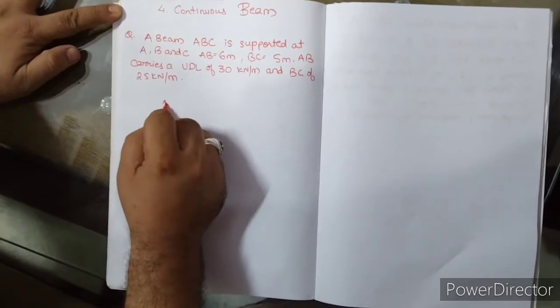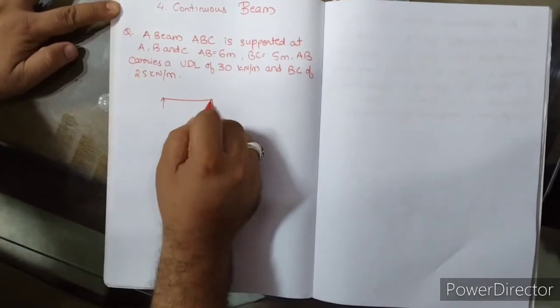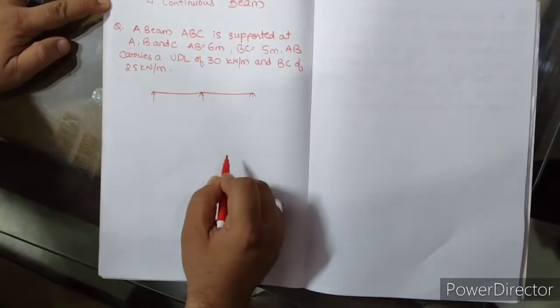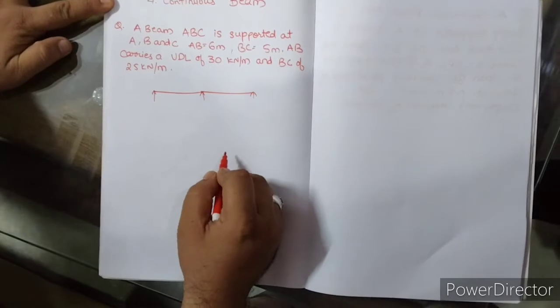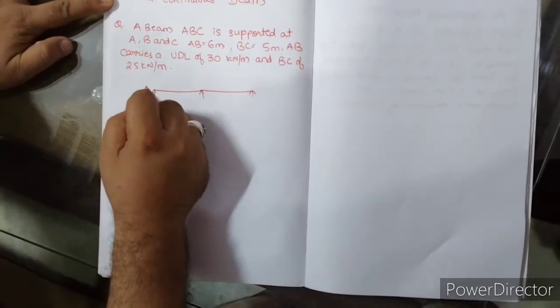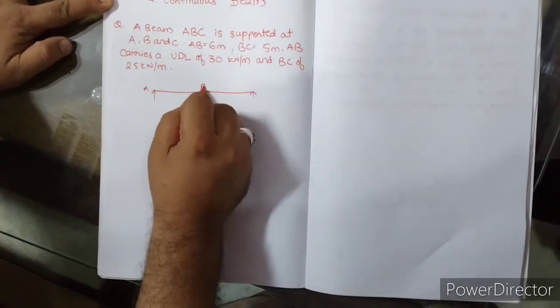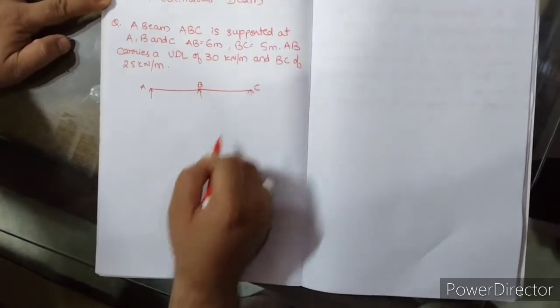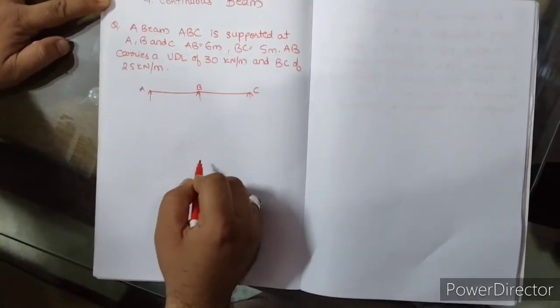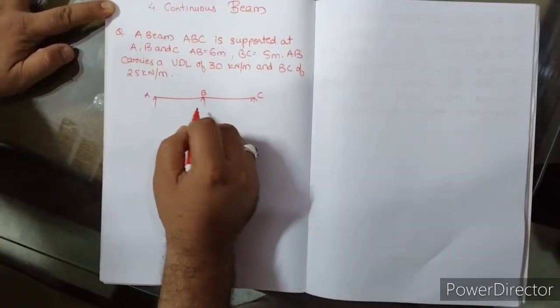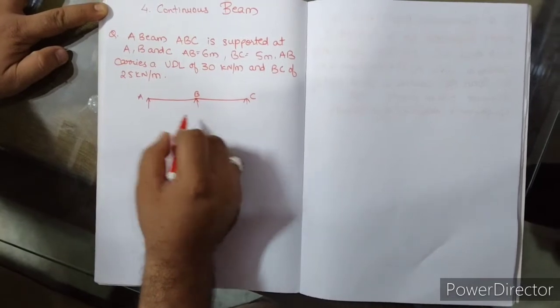Simply supported beam, 2x is equal to span. ABC, supported at A, B, and C.